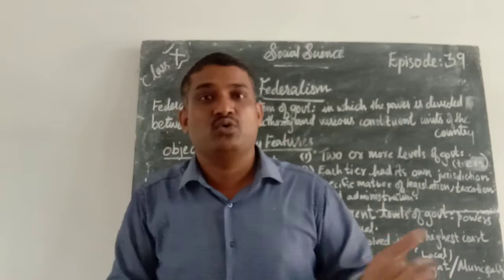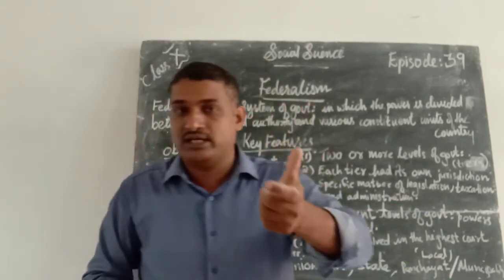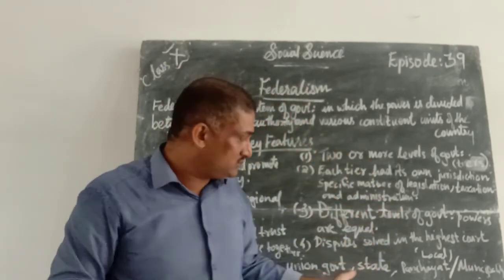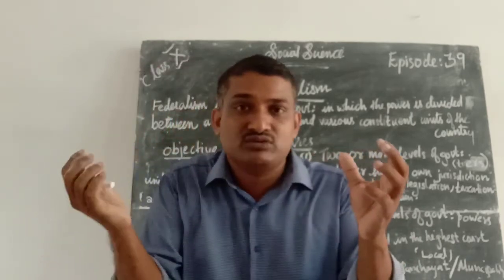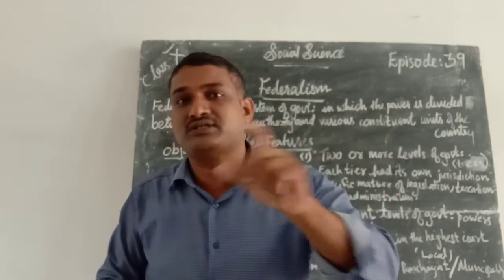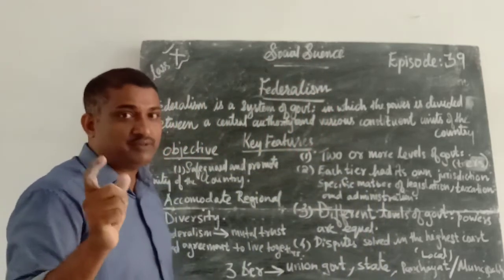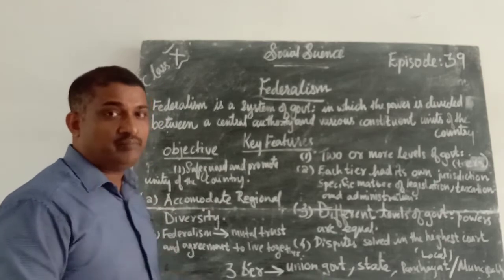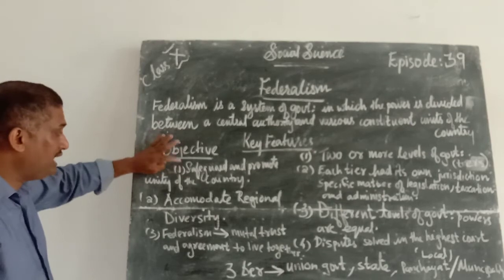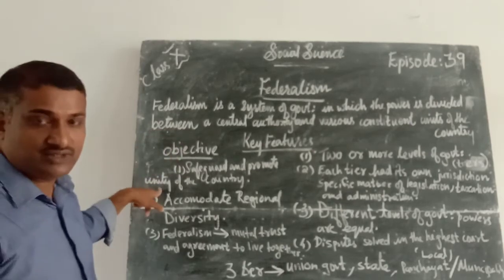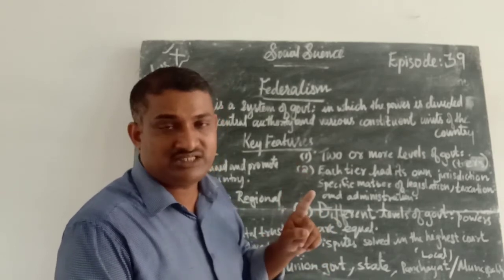Rather than negative thinking, love our country. We should have that unity or integrity. We have to protect and preserve the integrity or unity of our country. People should have patriotic values. The first objective is: safeguard and promote the unity of the country — that was the main objective of federalism.